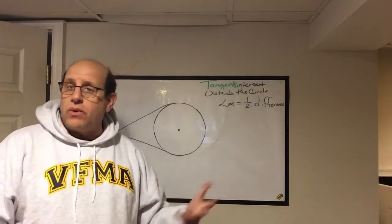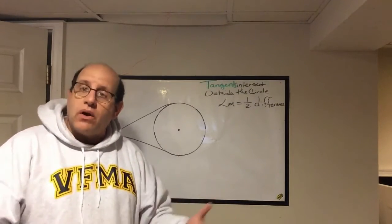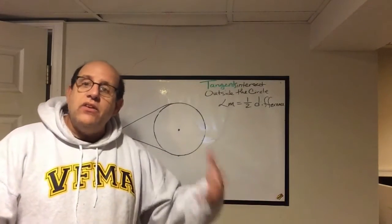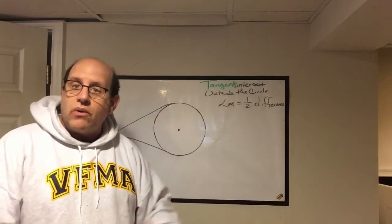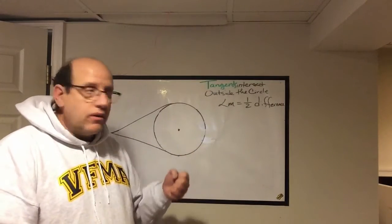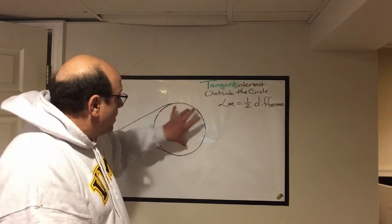Those are the two easy ways to figure this out. If they give you one arc, you subtract that from 360, and then you can find what's going on. If they give you one arc, then you find the difference, you find this major arc.